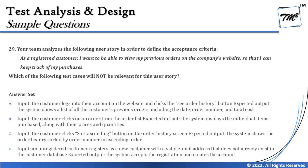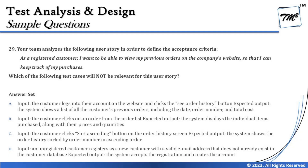Question number 29 says: your team analyzes the following user story in order to define the acceptance criteria. The user story is: as a registered customer, I want to be able to view my previous orders on the company's website so that I can keep track of my purchases. This is something we do often when shopping online — checking order history from a dashboard. The question asks: which of the following test cases will NOT be relevant for this user story?